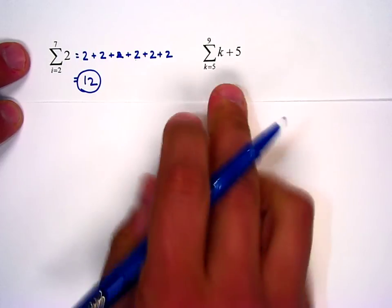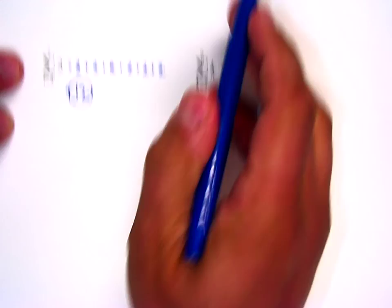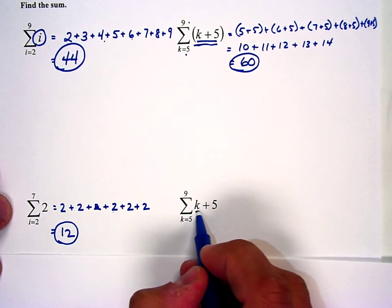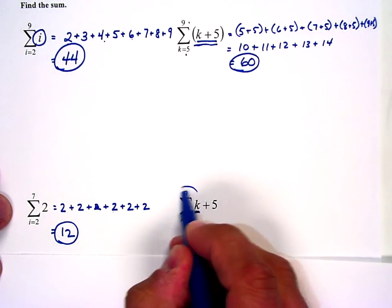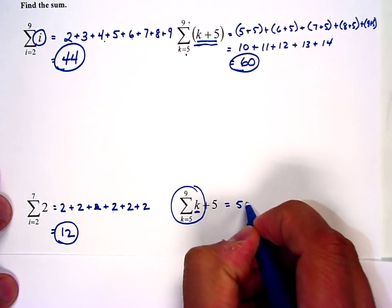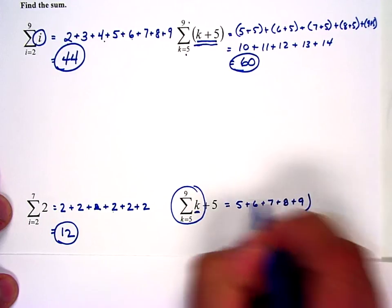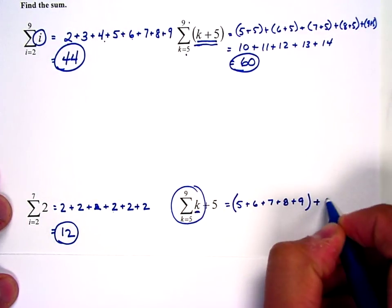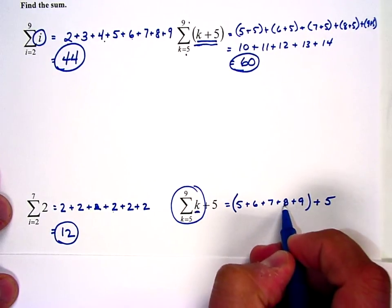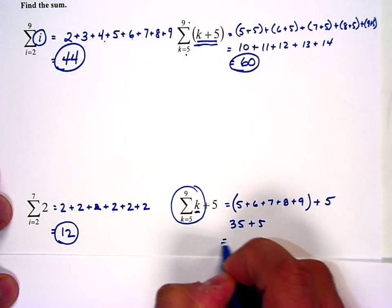And then this final problem is a little bit trickier. And that's because this k plus 5 is different than this k plus 5. Here, k plus 5 is the term. This is just wanting to do k, the sum of k from 5 to 9, and then add 5. So that's going to look like this, 5 plus 6 plus 7 plus 8 plus 9. That's the sum, and then we throw a 5 out to the side. So that's 11, 18, 26, 35, 35 plus 5, which is 40.